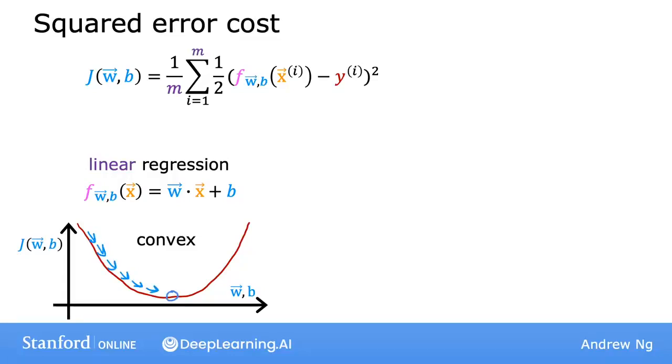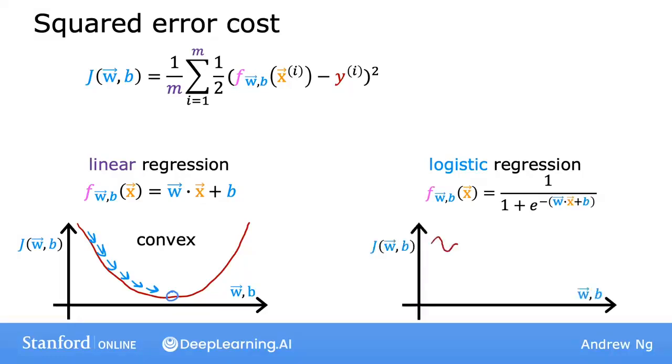Now, you could try to use the same cost function for logistic regression. But it turns out that if I were to write f of x equals 1 over 1 plus e to the negative w x plus b, and plot the cost function using this value of f of x, then the cost will look like this.